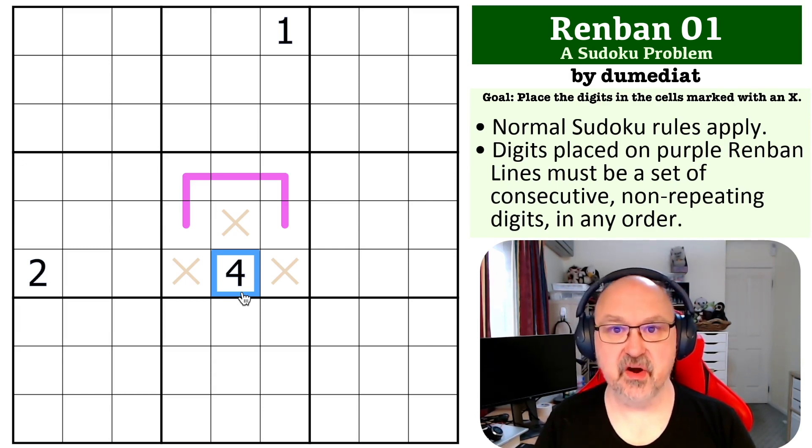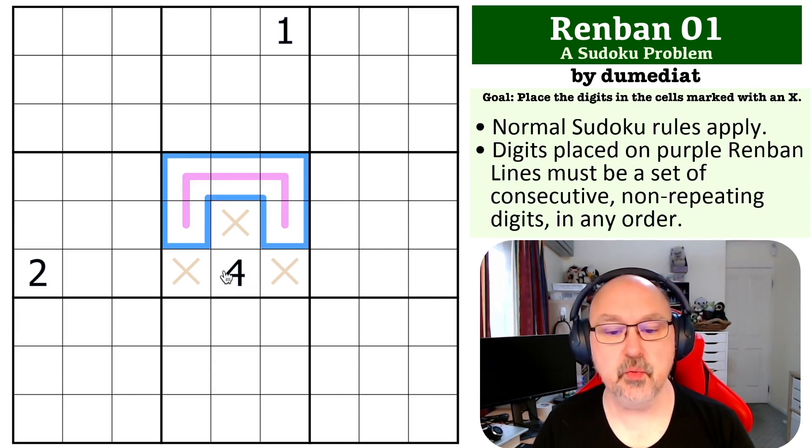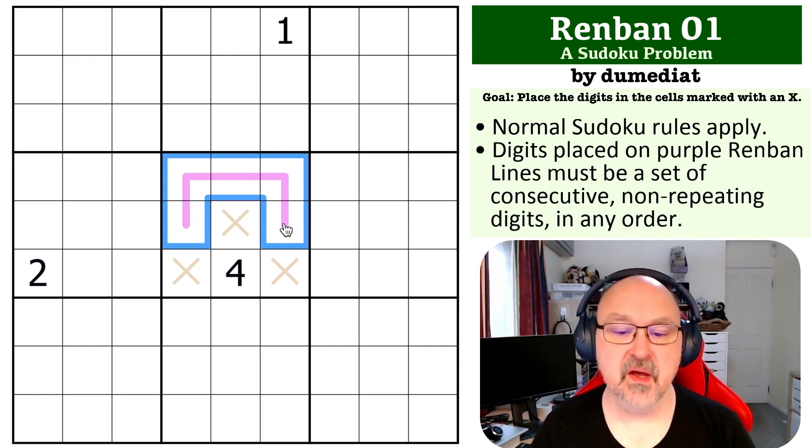We must put five, six, seven, eight, nine on the Renban, because this must be a run of sequential digits. This four prevents this being from being anything other than five, six, seven, eight, nine.